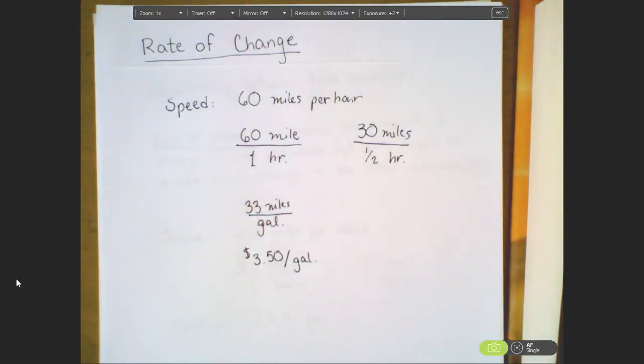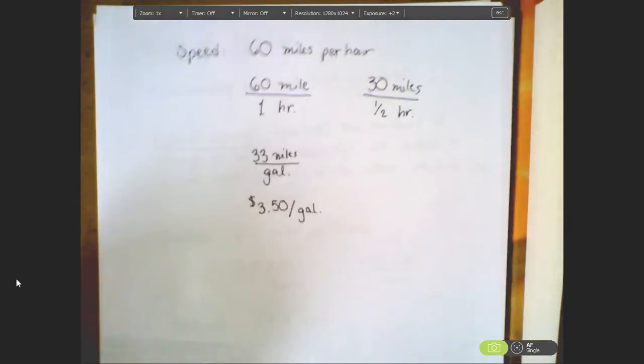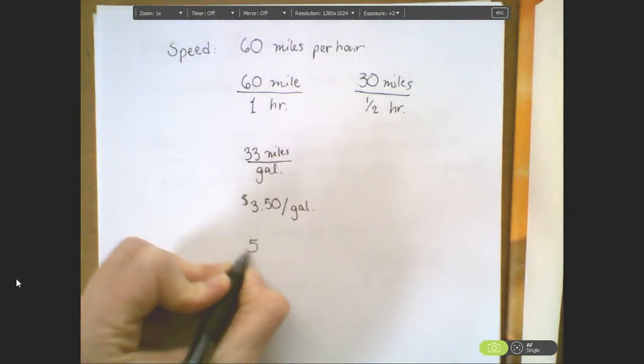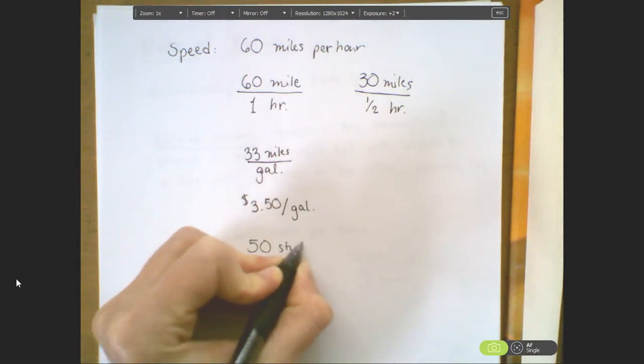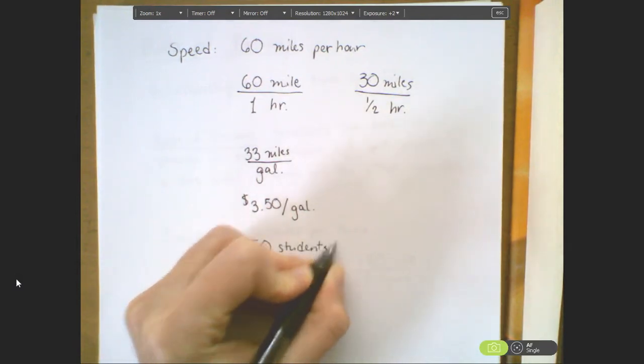We could also have rates that have nothing to do with distance or time. This is an example of money per gallon. We could also have rates that have to do with whole units of items. You could say that we have maybe 50 students per class.